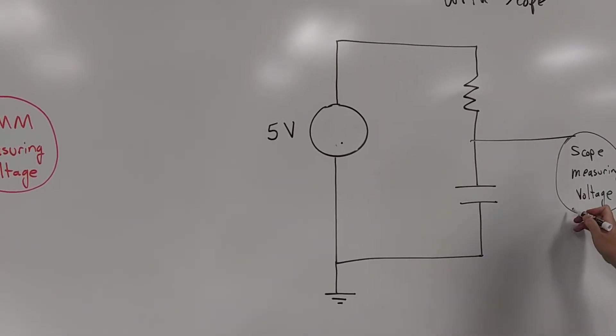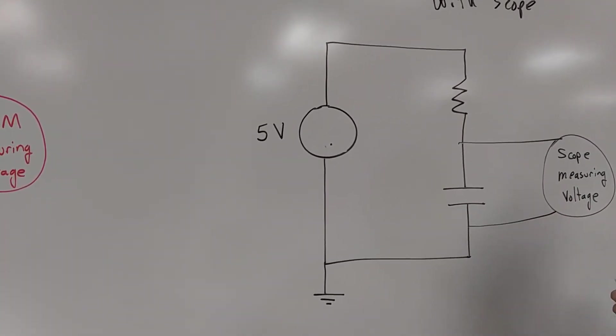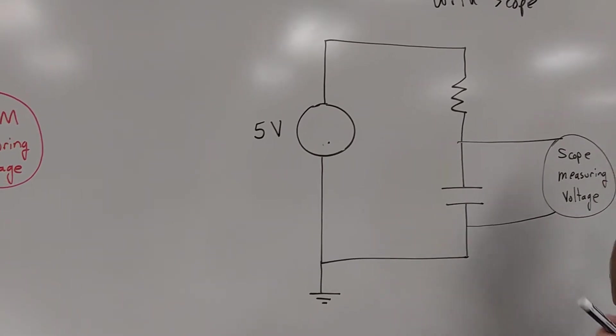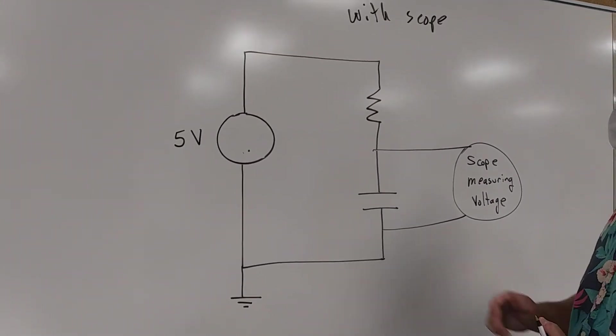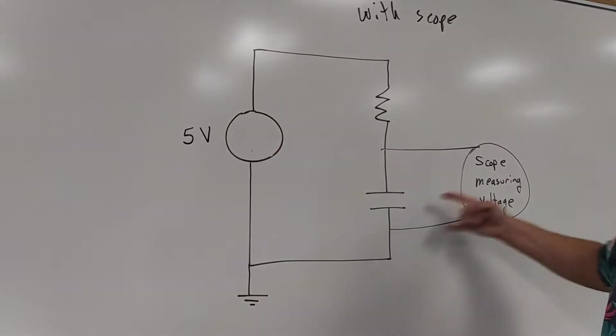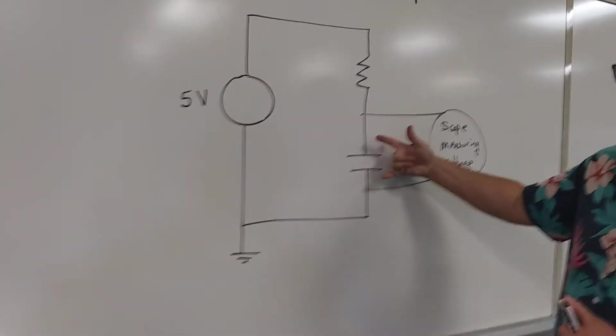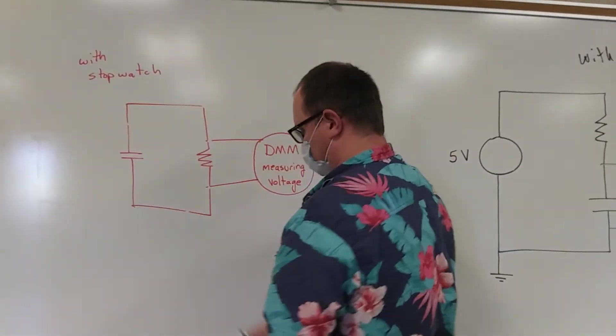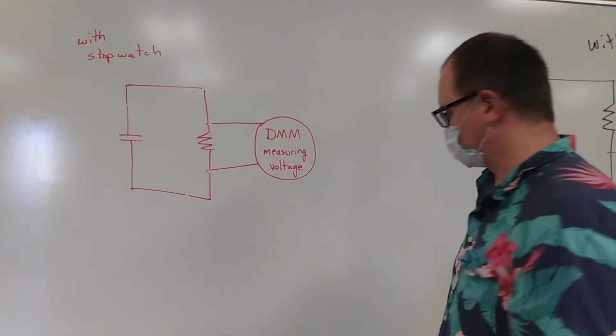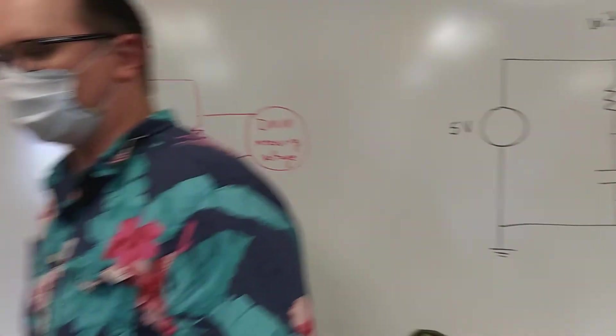Now we're going to be measuring the voltage across the capacitor. And you might be saying should that be different? Well this is because of grounding issues and we'll learn more about that at another time. But for now we know that measuring the voltage across the capacitor in this circuit is the same as measuring this voltage, because this voltage is the voltage across the capacitor. Now let's go and show you what this looks like and get you on to the lab.